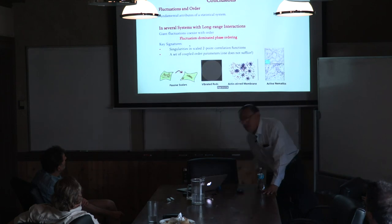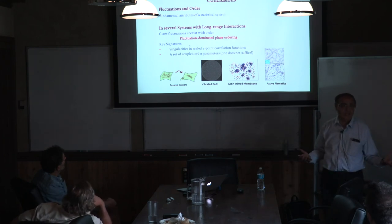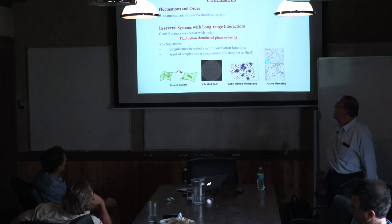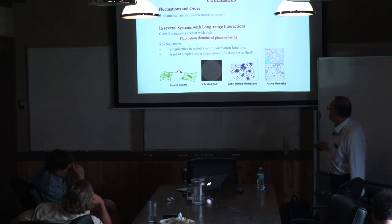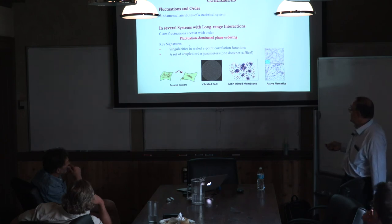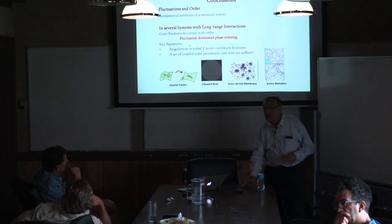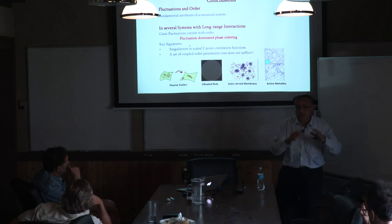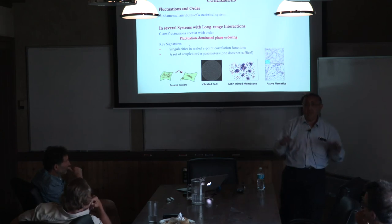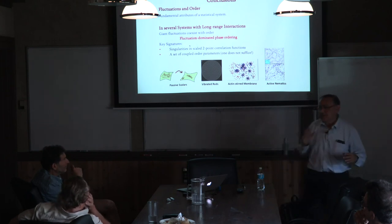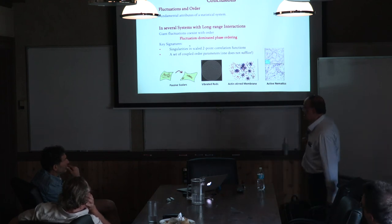So, in conclusion: fluctuations and order are very fundamental attributes of any large system, and we have seen that they can coexist. The key signatures I have emphasized today are singularities in the two-point correlation functions — the cusp — and the fact that you need more than one Fourier mode. You have a set of Fourier modes and you need to examine the transfer of weight from one to another for a good description of the order. What you really need are joint probabilities, which are very difficult to handle and we have not attempted that, but that is the way to do it. Thank you.